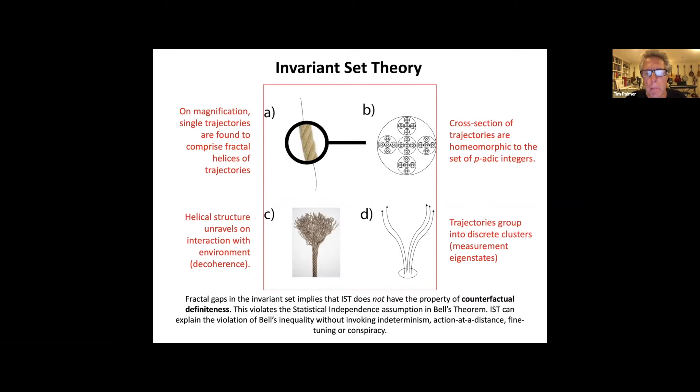These gaps in state space can be thought of as counterfactual worlds, potential counterfactual worlds which according to the theory would not be realistic because they would not lie on the invariant set. The fundamental conjecture of Invariant Set Theory is it describes all of the realistic states of the universe, and typically these fractals are measure zero in the Euclidean embedding space.